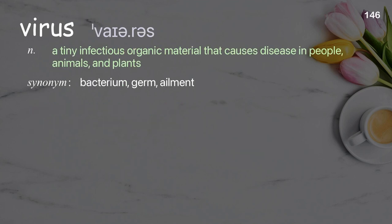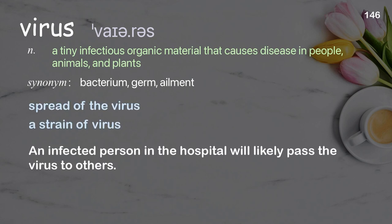Virus: a tiny infectious organic material that causes disease in people, animals, and plants. Examples: spread of the virus, a strain of virus. An infected person in the hospital will likely pass the virus to others.